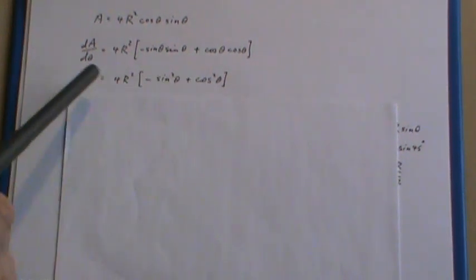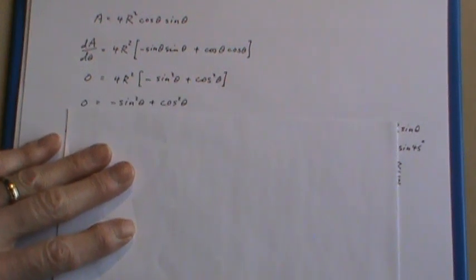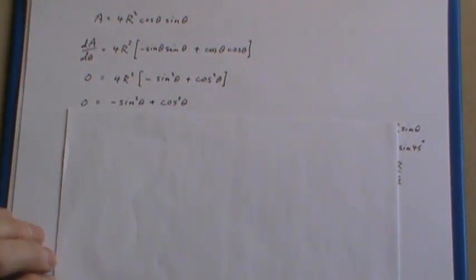Now the only thing that could make this 0 is what we have in the brackets. So we have -sin²θ + cos²θ = 0. Now once again you've got several ways of solving this.